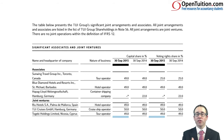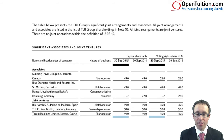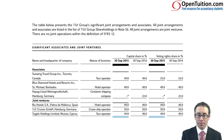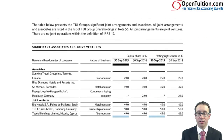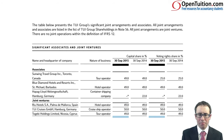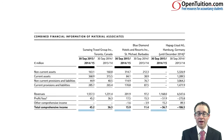Taking more extracts from the TUI Group financial statements, they show who the significant associates and significant joint ventures are — three associates and three joint ventures — and the percentage ownership in each. Then it gives more information, starting with the combined financial information of material associates. Those material associates — Sunwing, Blue Diamond, and Hapag-Lloyd — are given the key information in terms of assets, liabilities, revenues, profits, and OCI.